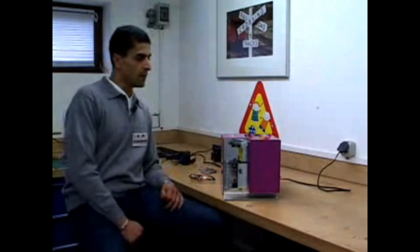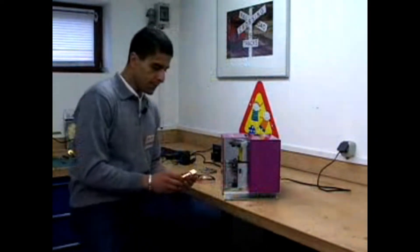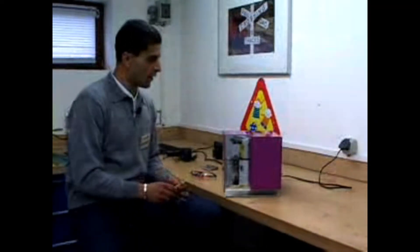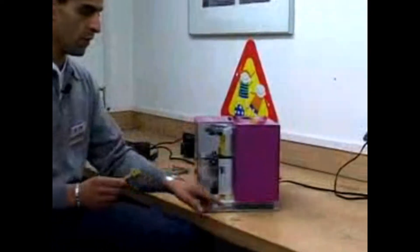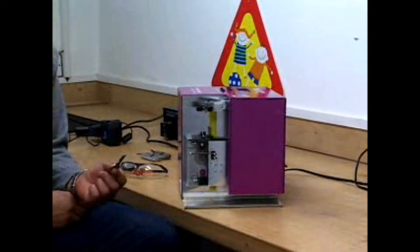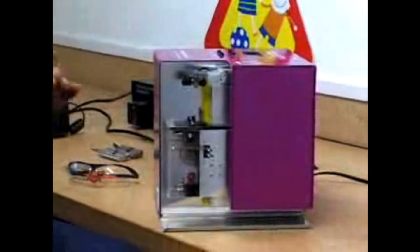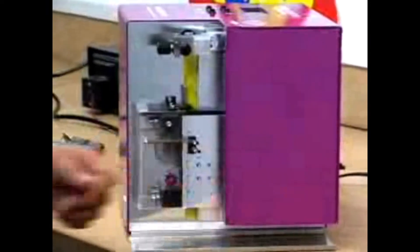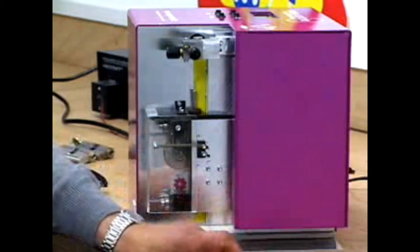We have five different key blanks and the machine tells you exactly which type of key blank you need if you want to make a copy from the original key. It tells you everything you need, step by step. It is very easy to use and now I can show you how it works.